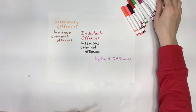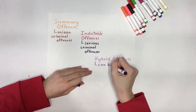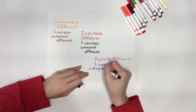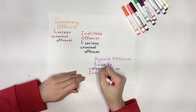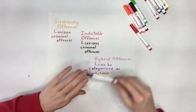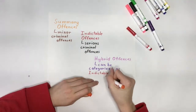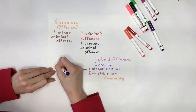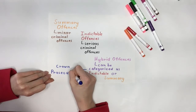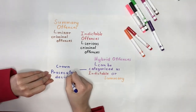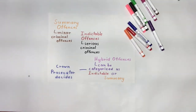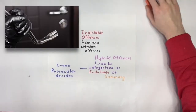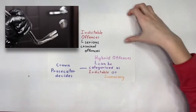Hybrid offenses are like a mix between the two. In this case, the Crown prosecutor gets to decide whether the case is to be treated like a summary offense or an indictable offense. Depending on the Crown prosecutor's decision, the trial will be held a certain way. A hybrid offense could be forced entry, theft or fraud under $5,000, and concealed weapon.